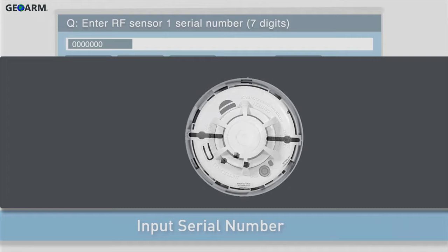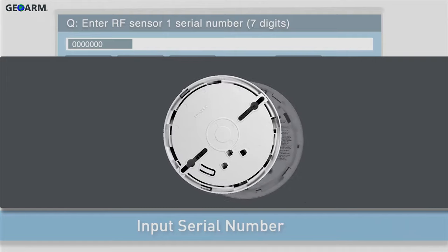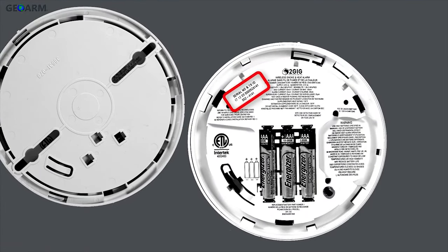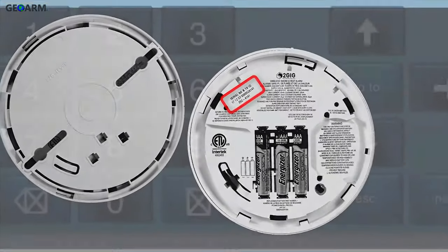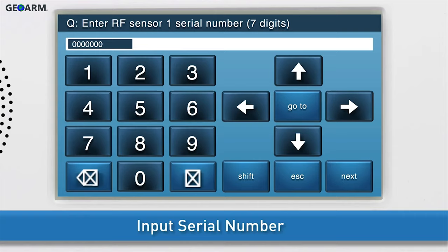Remove the detector from its mounting base by twisting the detector counter-clockwise. You will then see a sticker with the TXID number. You can either add the serial number with the panel's on-screen keyboard, or add it in wirelessly.